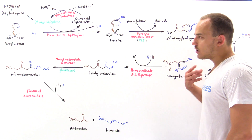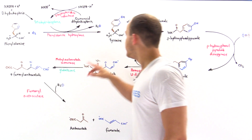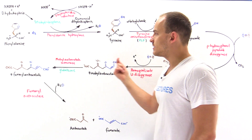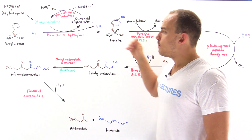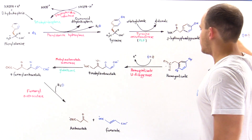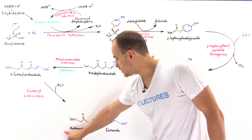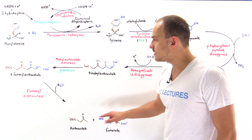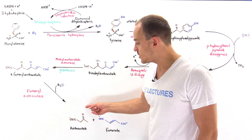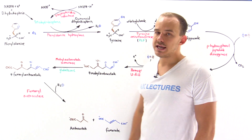Inside our cells, we can transform phenylalanine into tyrosine. Both phenylalanine and tyrosine, by following this series of steps, can be transformed into the carbon skeletons acetoacetate and fumarate. These can ultimately be used to form fuel molecules — either ketone bodies or glucose molecules.